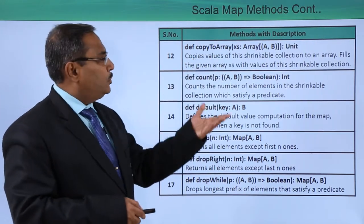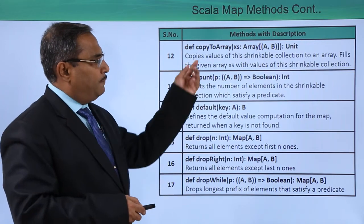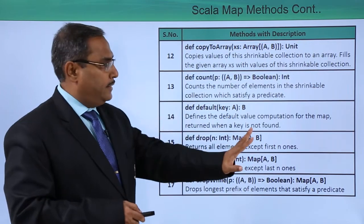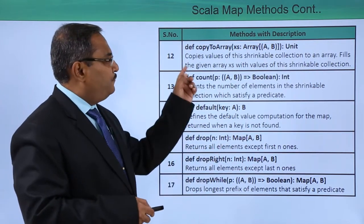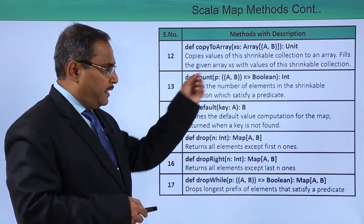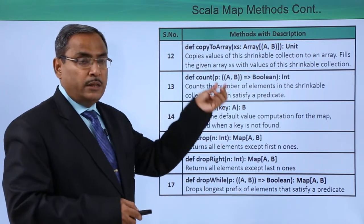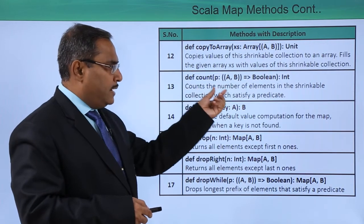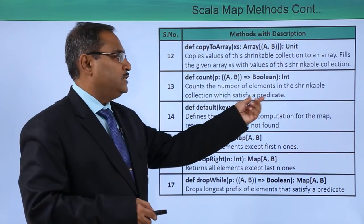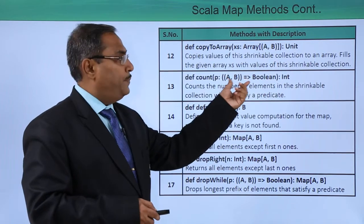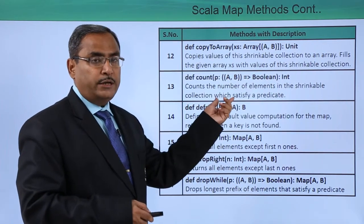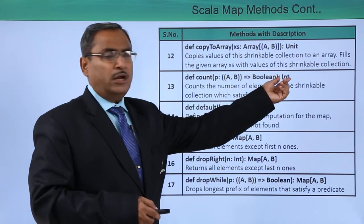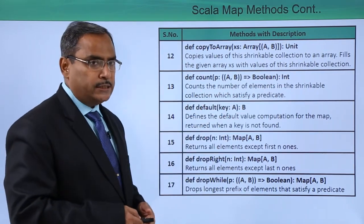We are having copyToArray, which copies values of this shrinkable collection to an array — from the map to the array. It fills the given array with values of the shrinkable collection. We are having count, which counts the number of elements in the shrinkable collection satisfying a certain predicate. When the predicate returns true it will be counted; when it returns false it will not be counted. As a result it returns one integer.